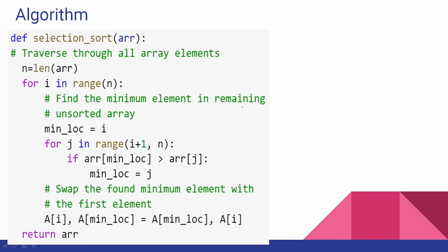If you use the pseudocode, let's take the same example: 3, 5, 1, 4, 7. Compare with bubble sort — def bubble_sort versus def selection_sort. The parameter is the same. The next lines follow the same structure.